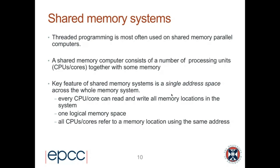What do I mean by a shared memory parallel computer? At the very basic level, the mental model we should have is a number of processing units — CPUs or cores — together with some memory. The key feature of shared memory systems is that they support a single address space across the whole memory system, meaning every CPU or core is able to read and write all the memory locations in the system. We really have one logical memory space, and all CPUs or cores refer to a memory location using the same address.